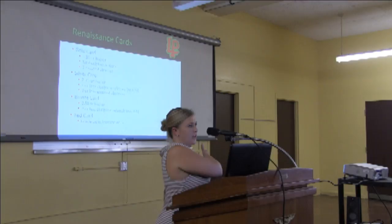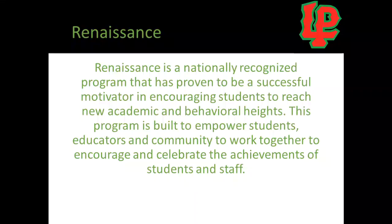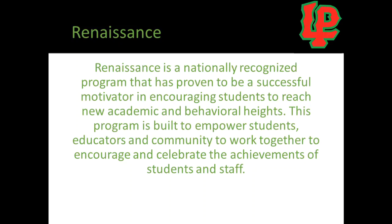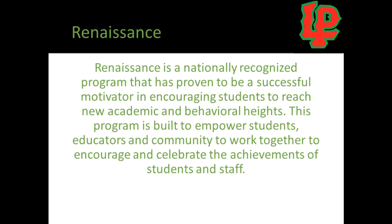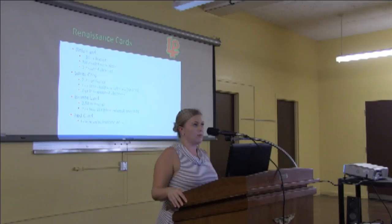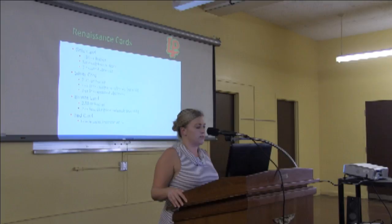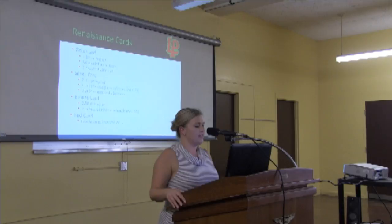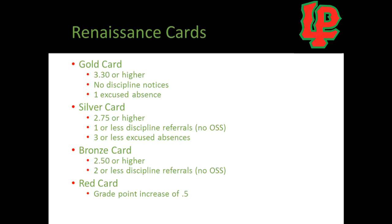There are different types of Renaissance Cards you can earn. The gold card — the one everyone strives for — requires a 3.30 or higher GPA, no discipline referrals, and one or fewer excused absences. We go all the way down to a red card, which simply requires your GPA to have increased by 0.5 or higher from the previous semester. Students may earn a gold, silver, or bronze card this first semester, evaluated in January.